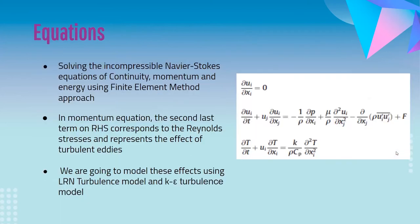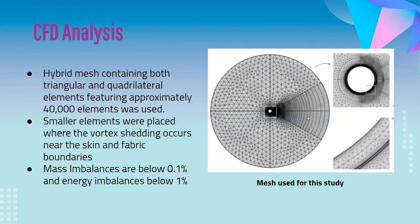To perform computational fluid dynamics, we solve the incompressible Navier-Stokes equations of continuity, momentum and energy. In the momentum equation, the term Ū_i U_j corresponds to Reynolds stresses representing effects of turbulent eddies. We modeled the flow using the LRN turbulence model and K-Epsilon turbulence model. A hybrid mesh containing both triangular and quadrilateral elements with approximately 40,000 elements was used. Smaller elements were placed where vortex shedding occurs near skin and fabric boundaries, ensuring mass imbalances below 0.1% and energy imbalances below 1%.